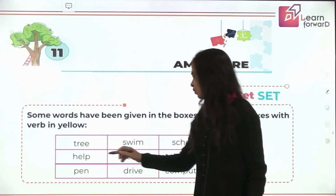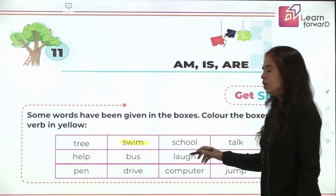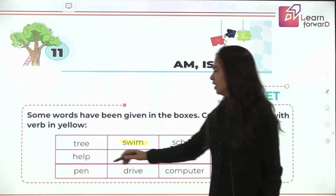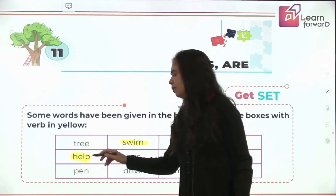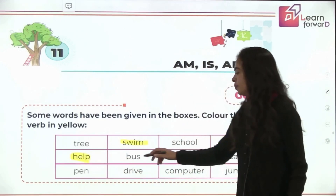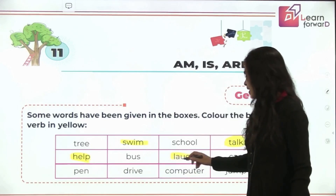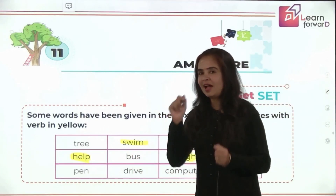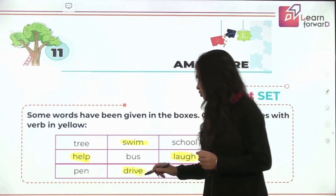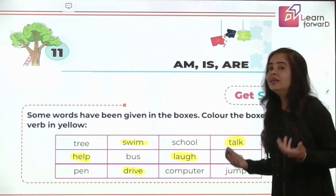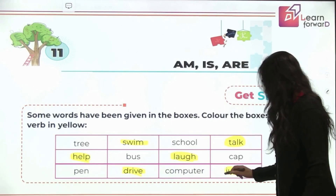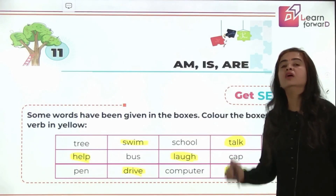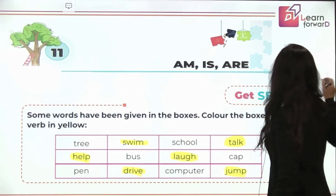Is 'tree' a verb? Is it an action? No. Swim? Yes. School? No. Talk? Yes — this is the most one you do in class with your friends. Help? Yes — you all help your friends and everybody in need. Bus? No. Laugh? Yes — you laugh aloud at jokes. Cap? No. Pen? No. Drive? Yes, that is an action, so that is a verb. Computer? No. Jump? Yes, of course — you all jump like monkeys! So all these highlighted words are verbs; they are actions. That was the recall on verbs.